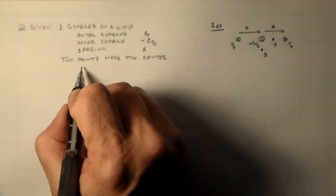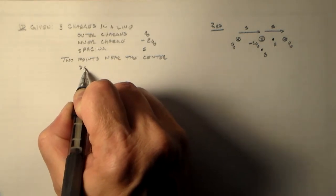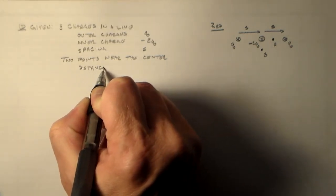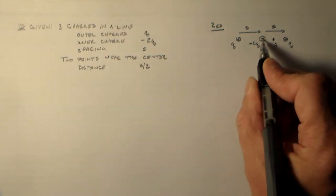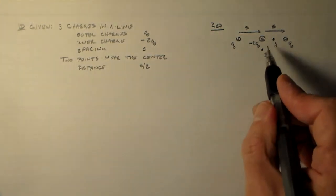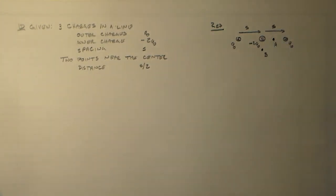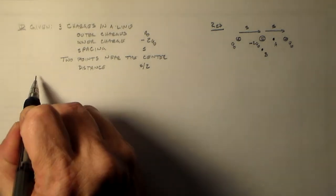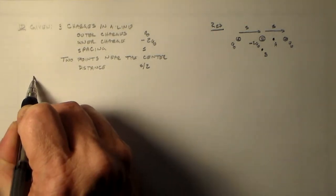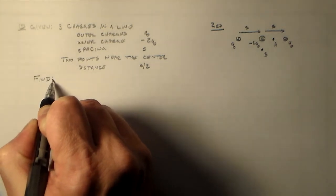And we have two points near the center charge, near that guy, and the distance from that center is S over 2. We've already said that they're perpendicular, one's along there, one's along there. We'll make that explicit later on.